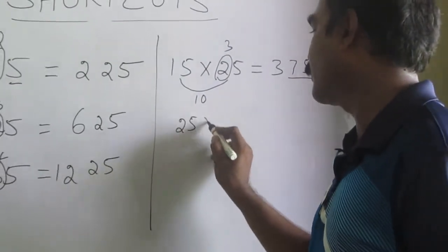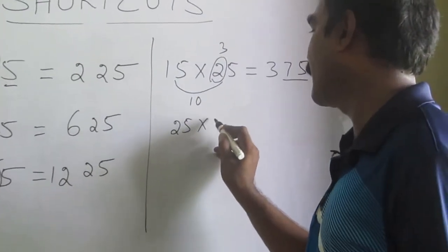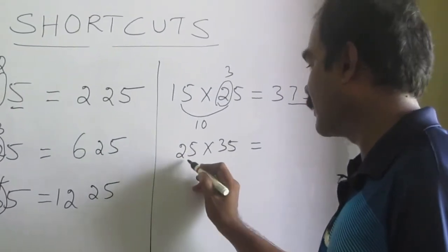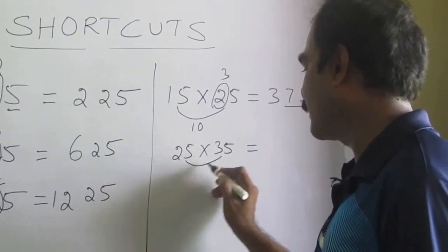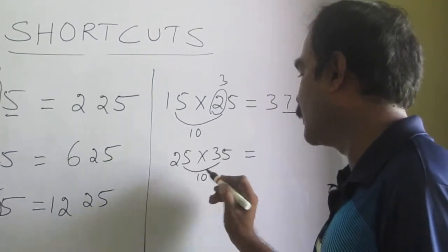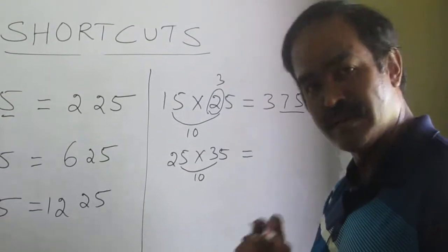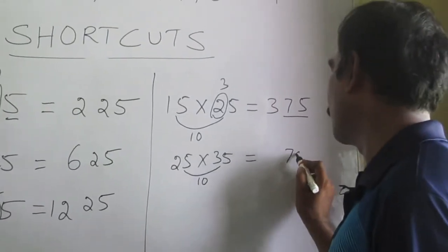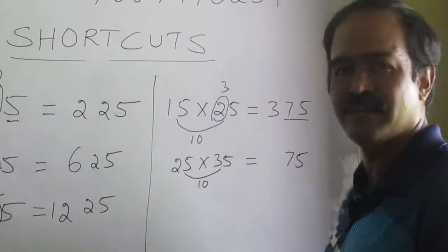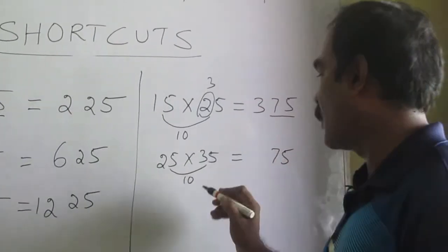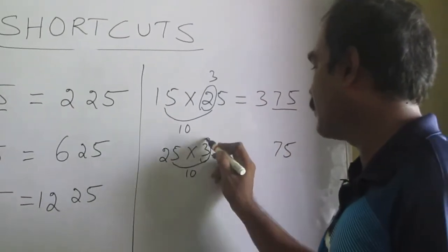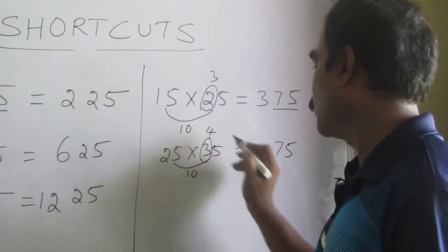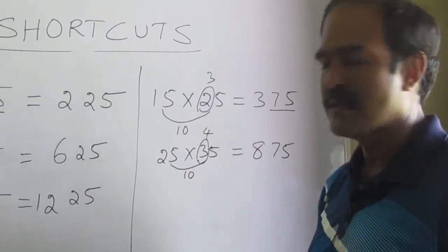What is 25 times 35? Again you can see a gap of 10 between the two numbers. Your answer is correct — the last two digits have to be 75. What should be the first number? Just increase one more: 2 times 4 is 8. So the answer is 875.